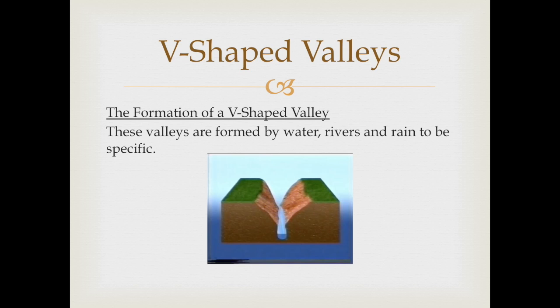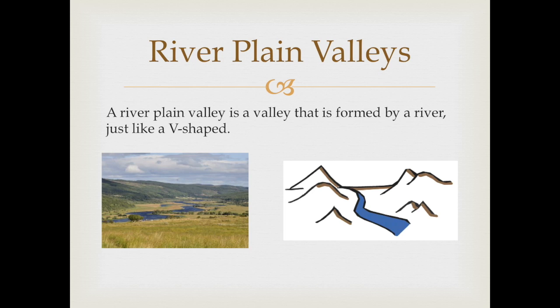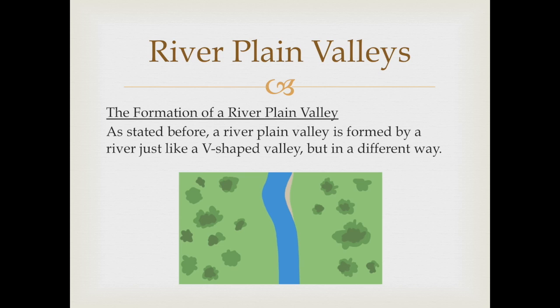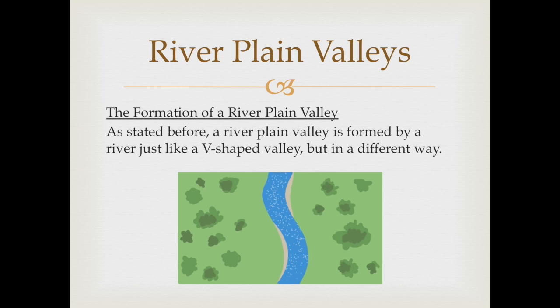A river plain valley is a valley formed by a river, just like a V-shaped valley, but in a little bit different way. River plain valleys are made of slow-moving rivers flowing gently downward back and forth across the valley floor. The water on the outer edge of the curve moves faster, eroding more along the sides of the channel than along the bottom. This is what causes the winding back and forth of the river along the valley floor, forming the wide river plain valley.